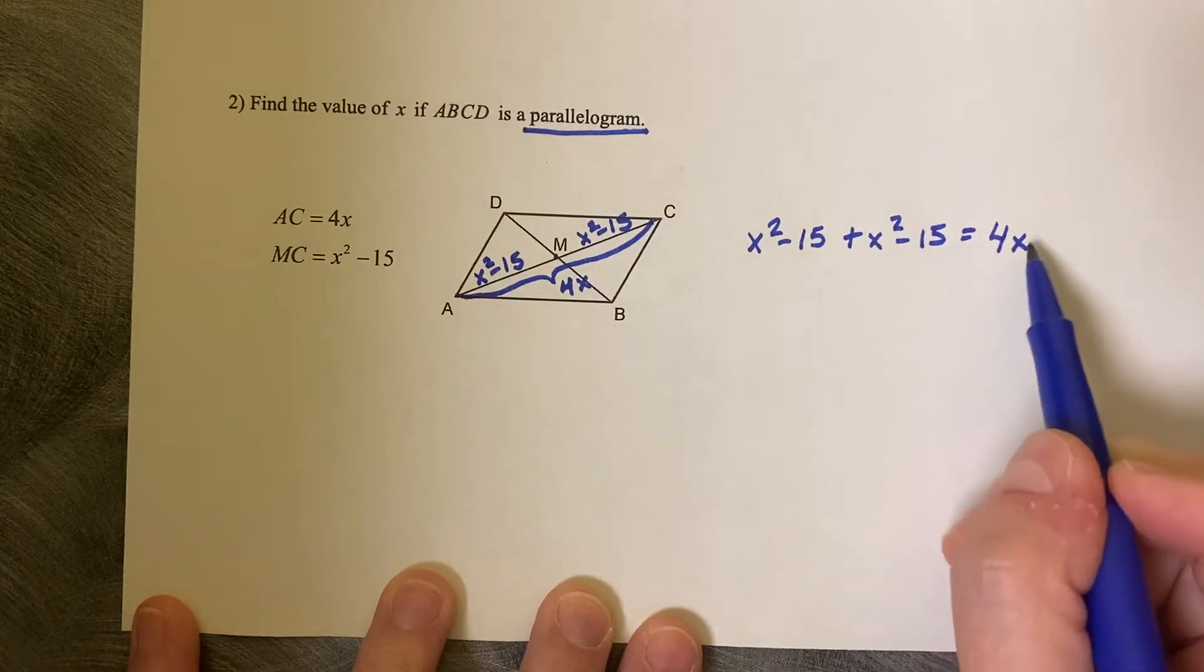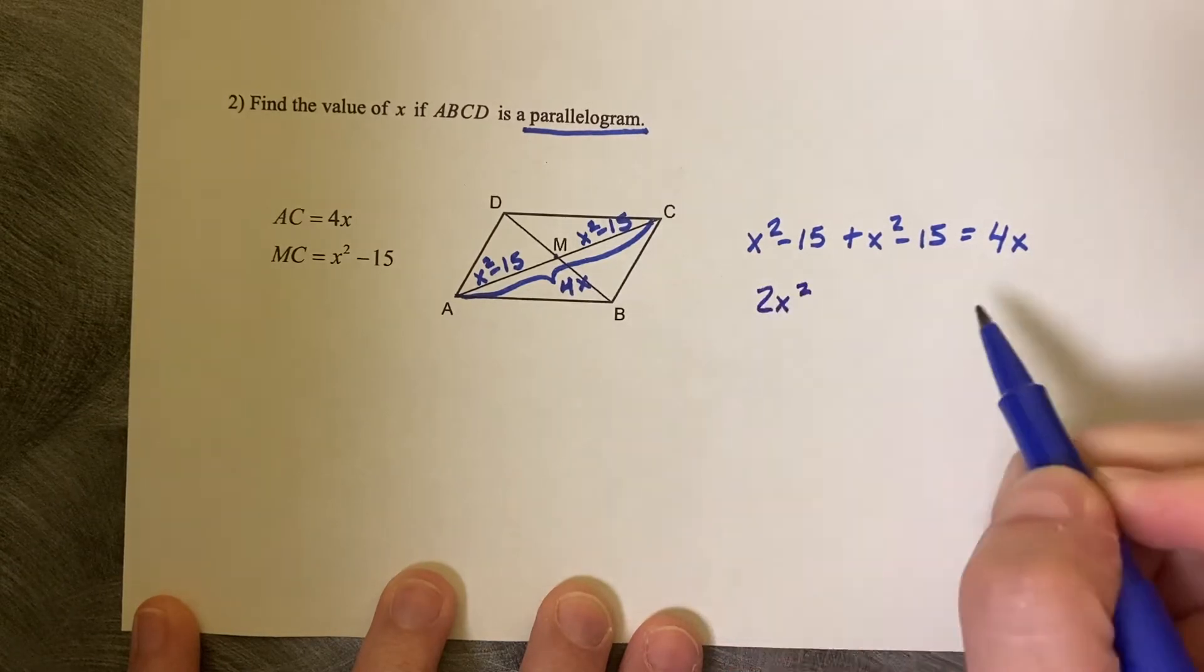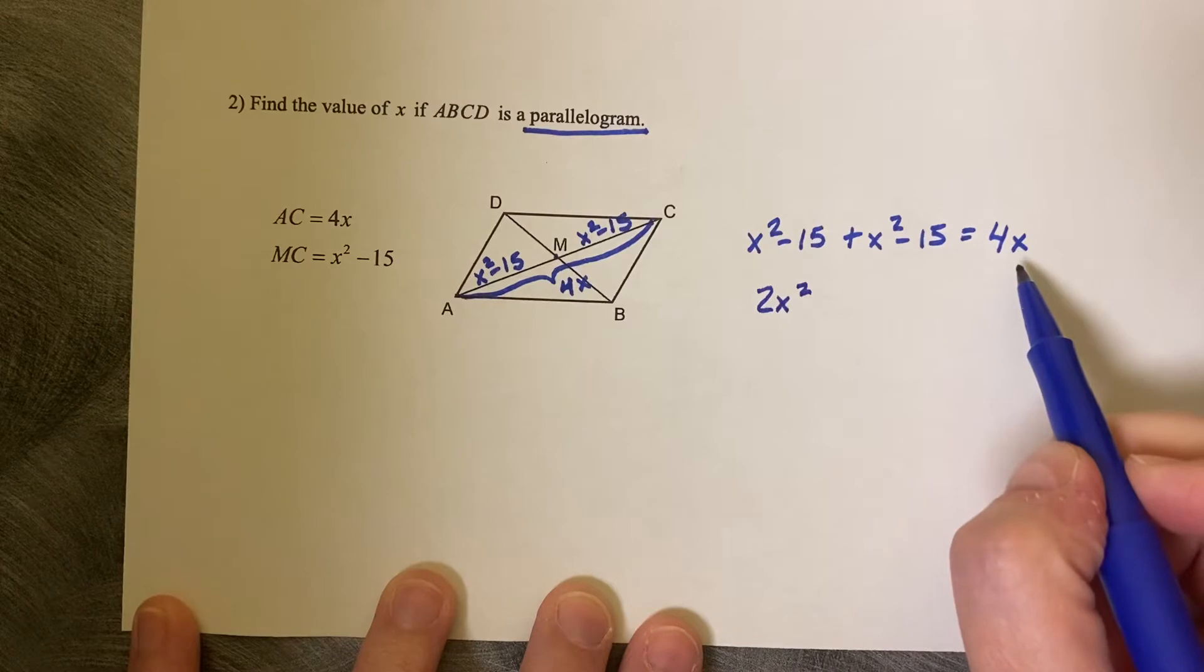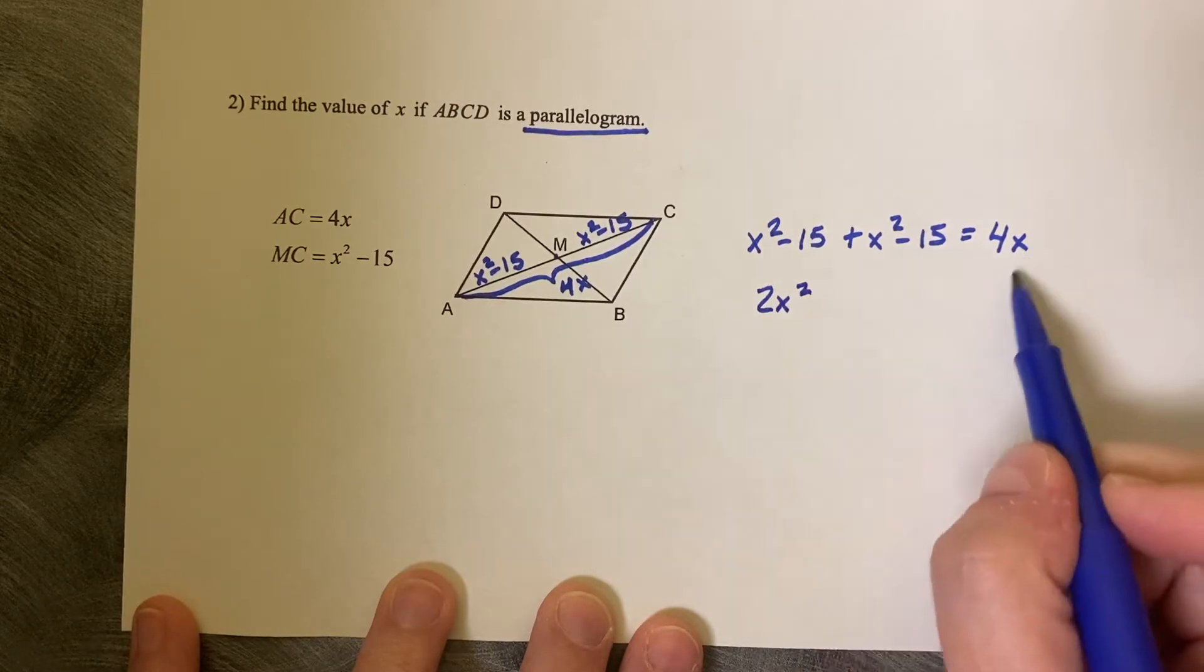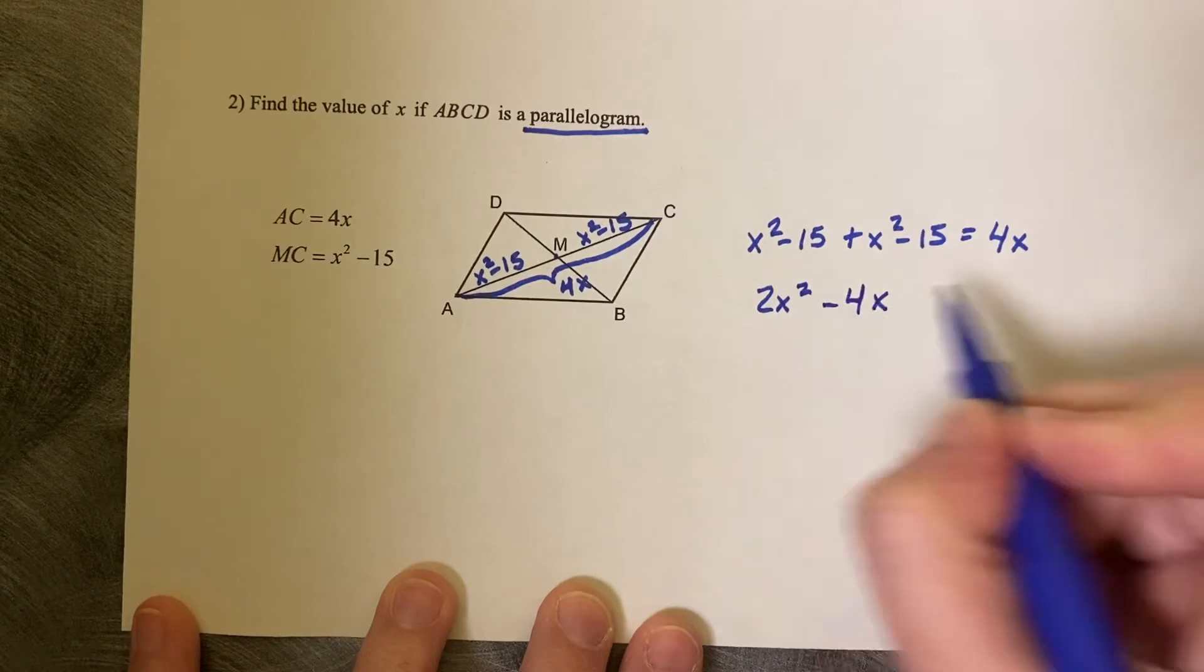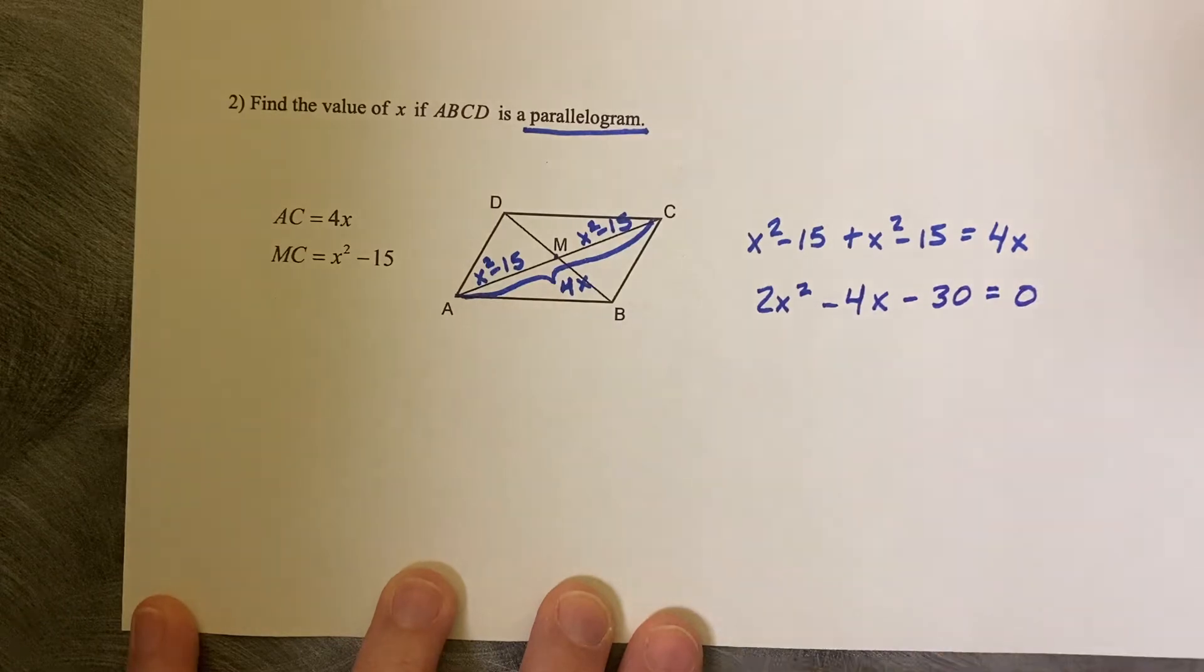So first, we need to get it equal to zero. So we're going to combine like terms, 2X squared, and then we can combine our X over onto the other side, so subtract 4X. And then negative 15 and negative 15 makes negative 30 equals zero.